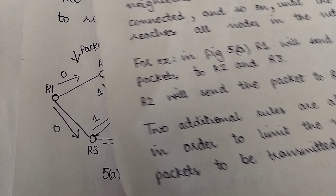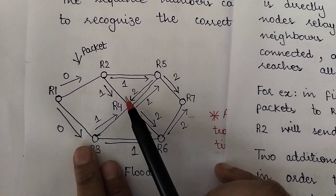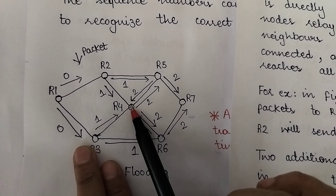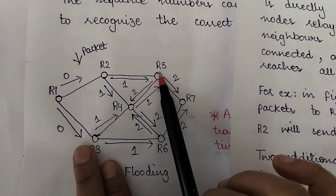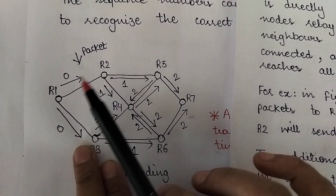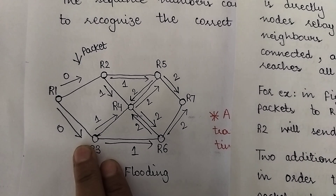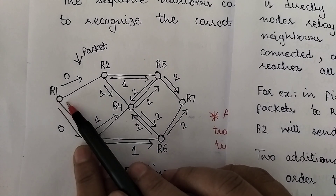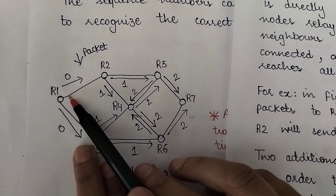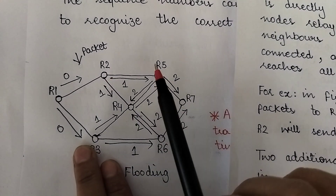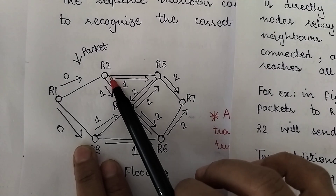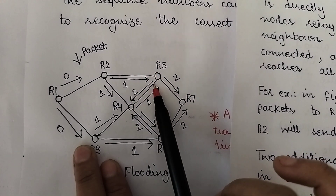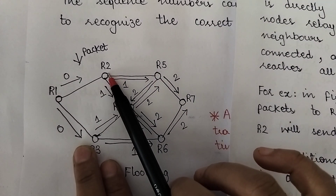R2 will send the packet further to r4 and r5, which are the nodes directly connected to it. You might ask why r2 doesn't send it back to r1 — the rule is that a node cannot transmit a packet back to the sender. So r2 received the packet from r1 and will not send it back to r1.